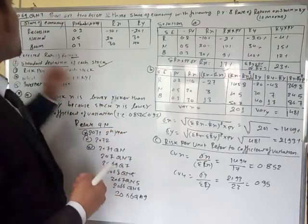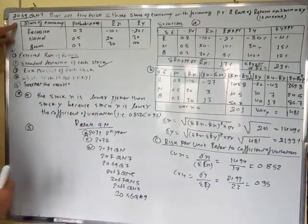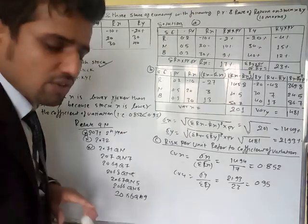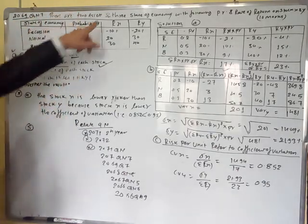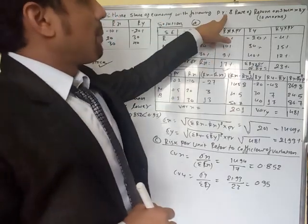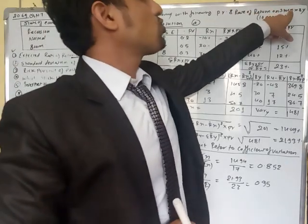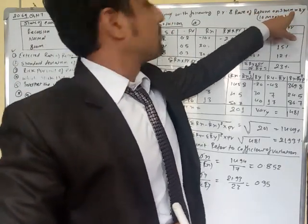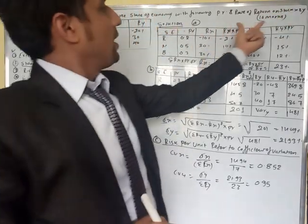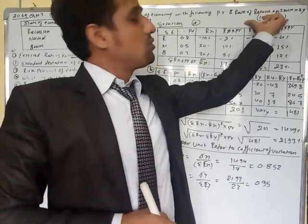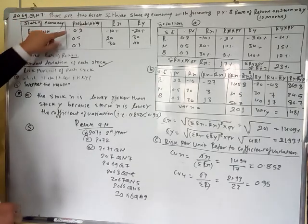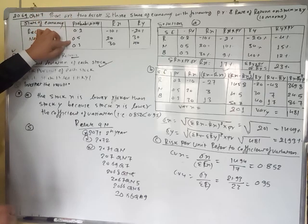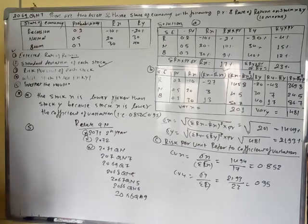Now I want to solve this question from the 2069 exam, question number seven. There are two assets and three states of economy with the following probability (PR) and rate of return on stock X and stock Y. The economic states are recession, normal, and boom, with probabilities 0.2, 0.5, and 0.3 respectively, and the returns for stock X and stock Y are given.